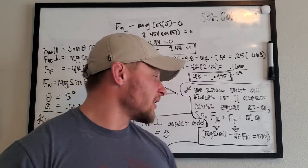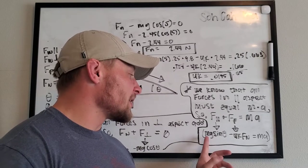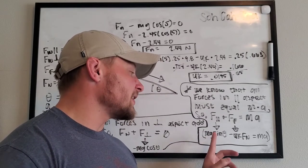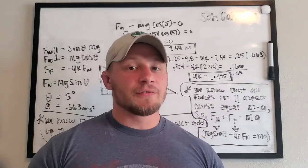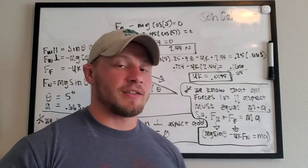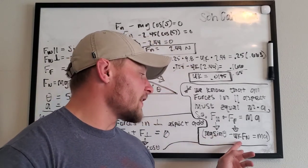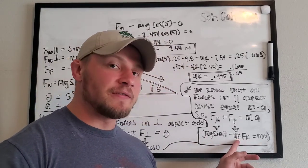And using SOH CAH TOA again, we can get the parallel forces by multiplying mass times gravity times sine theta. The friction force is also easy. We take the normal force and multiply it by the friction coefficient. Since we have all of these variables except for the friction coefficient, we can find the friction coefficient by plugging in all those variables.